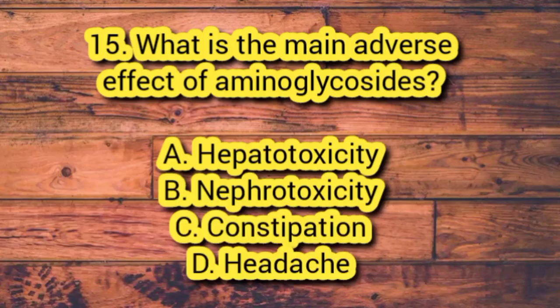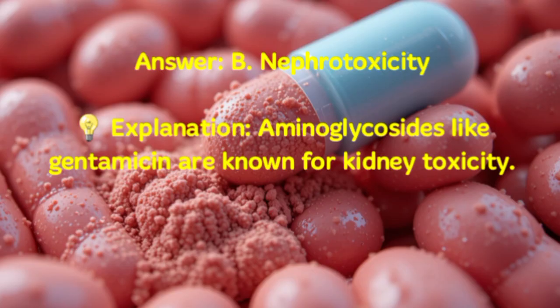Number 15. What is the main adverse effect of aminoglycosides? A. Hepatotoxicity. B. Nephrotoxicity. C. Constipation. D. Headache. Answer: B. Nephrotoxicity. Explanation: Aminoglycosides like gentamicin are known for kidney toxicity.